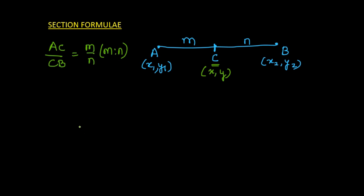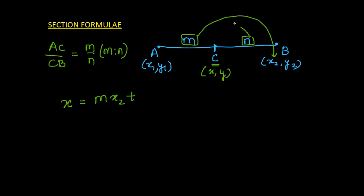Proving the section formula is not that important at this point. The section formula says that the x-coordinate of a point which divides the line in the ratio m is to n is: m multiplied by x2, plus n multiplied by x1, divided by the sum of m and n.